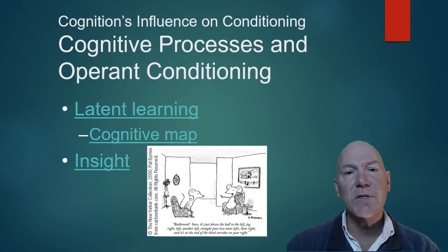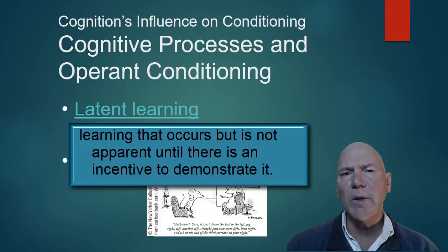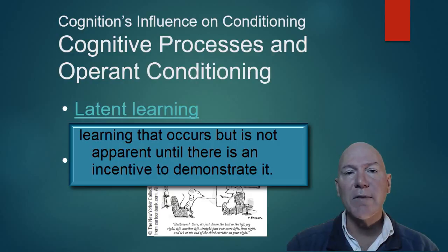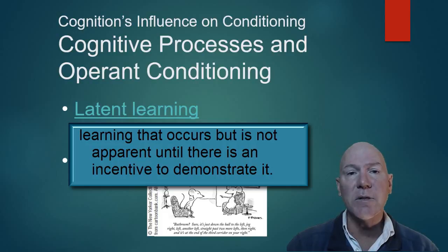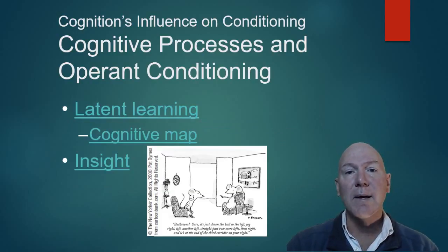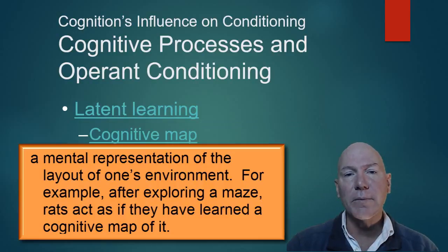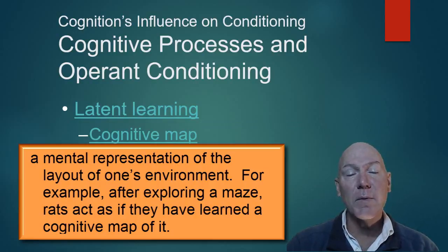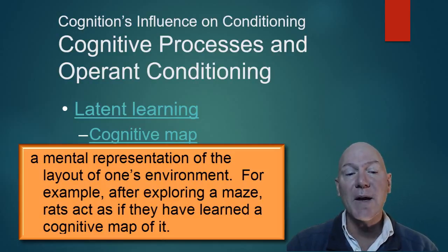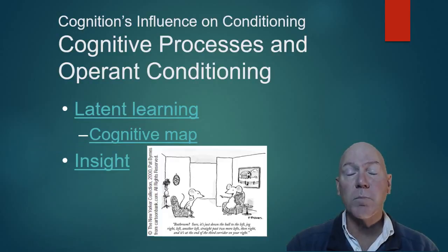As far as cognitive learning, we have latent learning — learning something without being aware of it until you need to use it. For example, driving around a town without paying attention: you couldn't tell someone how to get somewhere, but you could find it on your own. We call this a cognitive map. We studied this with rats shown a maze with no reinforcement — they would later navigate to food faster than rats that had never seen the maze, displaying latent learning when motivated.